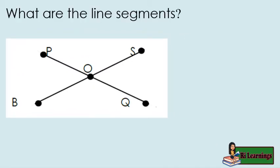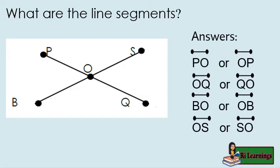What are the line segments in the figure below? The points P, O and points O, Q are joined by a straight line, and same with points B, O and points O, S. Hence we get line segment PO, line segment OQ, line segment BO, and line segment OS.